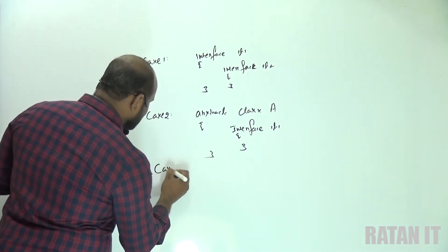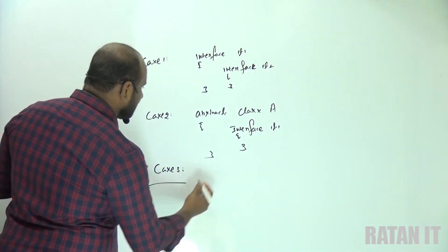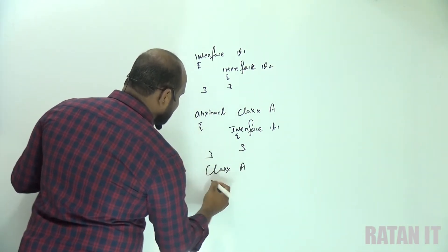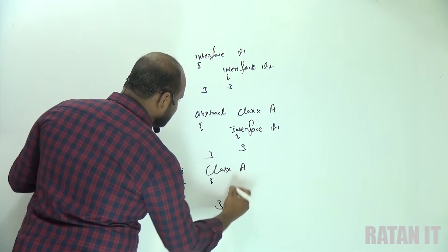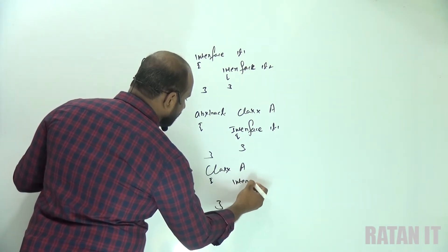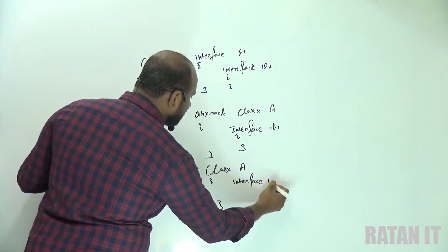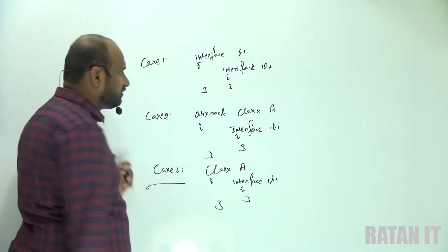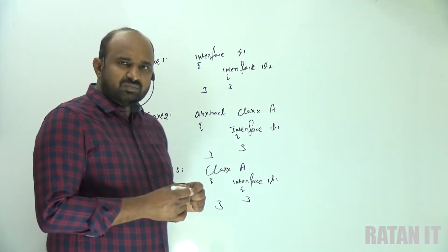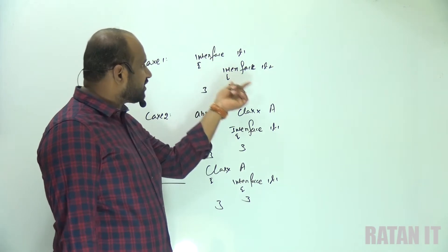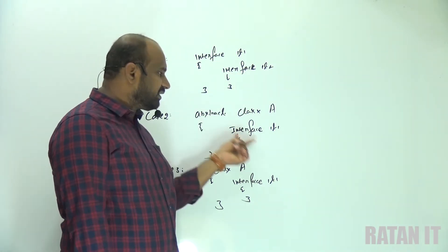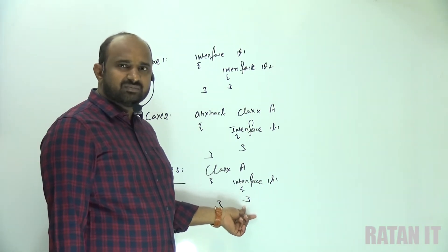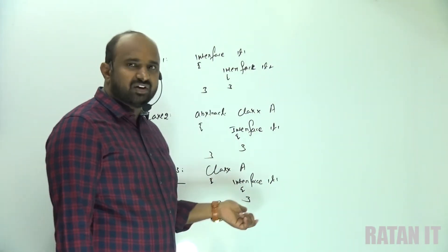Case three: declaring an interface inside a normal class. The syntax is: class (normal class) with interface id1 declared inside it. So the interface which is declared inside another interface, or inside an abstract class, or inside a normal class — all of these are called nested interfaces.